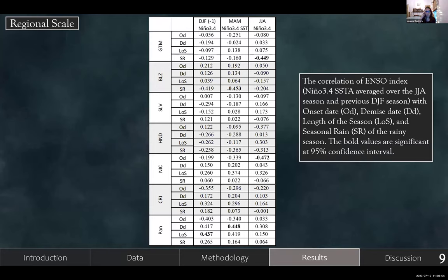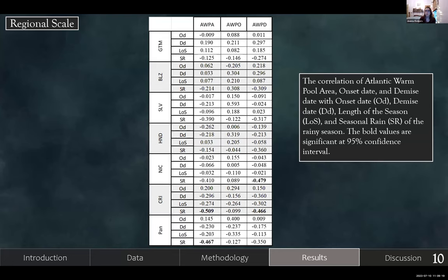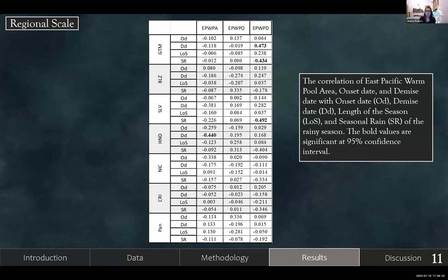We wanted to see if there were influences based on El Niño, so we did correlations based on the Niño 3.4 SST for different months leading into onset and demise. The correlations are not very strong and there's not a lot of significance at this regional scale. This is also true for the Atlantic warm pool data and the Eastern Pacific warm pool data — on the regional scale, there's not a lot of significance, but I'll come back to that at the local scale.